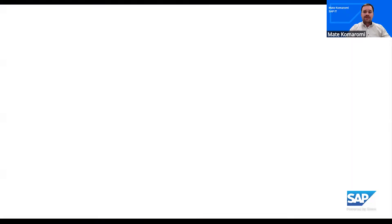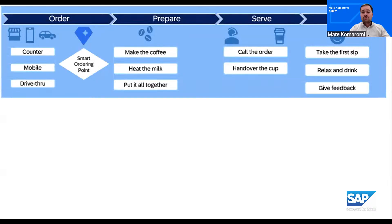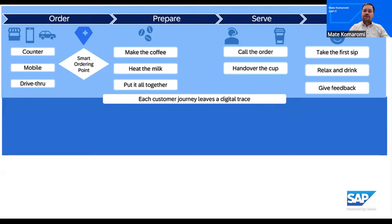Let me start with something simple. Imagine your morning coffee routine. You walk into a cafe, or maybe use a smart ordering point that already knows your favorite drink. It suggests your usual latte with almond milk, just the way you like it. You tap Confirm, Pay, and Wait as your order moves from preparation to pick-up. Now imagine that every step leaves a small digital trace — a choice, a timestamp, an action. When you connect those traces, you see the choreography of the experience: where it flows, where it slows, and where technology quietly makes life easier. Then comes the last step: how was your coffee today? That's feedback — the experience data. And when you combine it with process data, you see not only what happened, but how it felt.